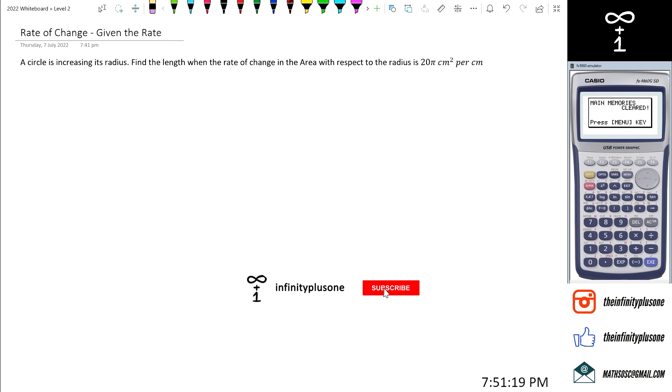Okay, so what we've got is this question right now where we've got a small circle and it's slowly increasing its radius, which means the area is increasing as well. Now this question is asking, find the length when the rate of change in the area with respect to radius is 20 pi.